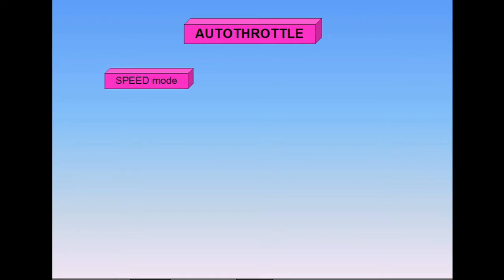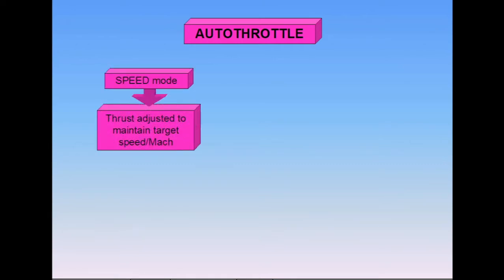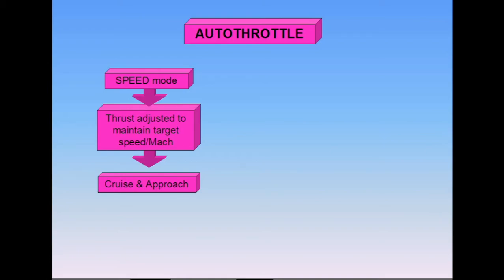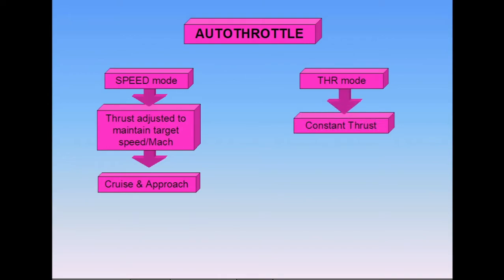The Autothrottle (A/THR) system can work in two different modes. In Speed mode, the Autothrottle system continuously adjusts the thrust in order to maintain a target speed or Mach, for example during cruise or approach. In Thrust mode, the Autothrottle system provides a constant thrust, for example during climb or descent.